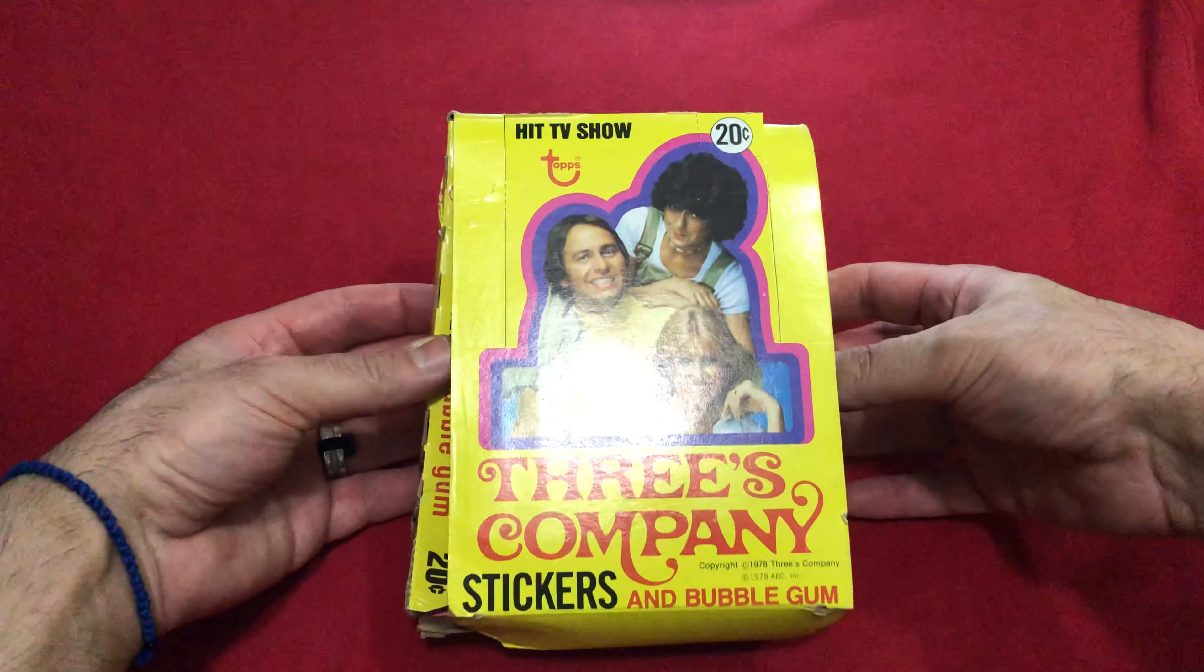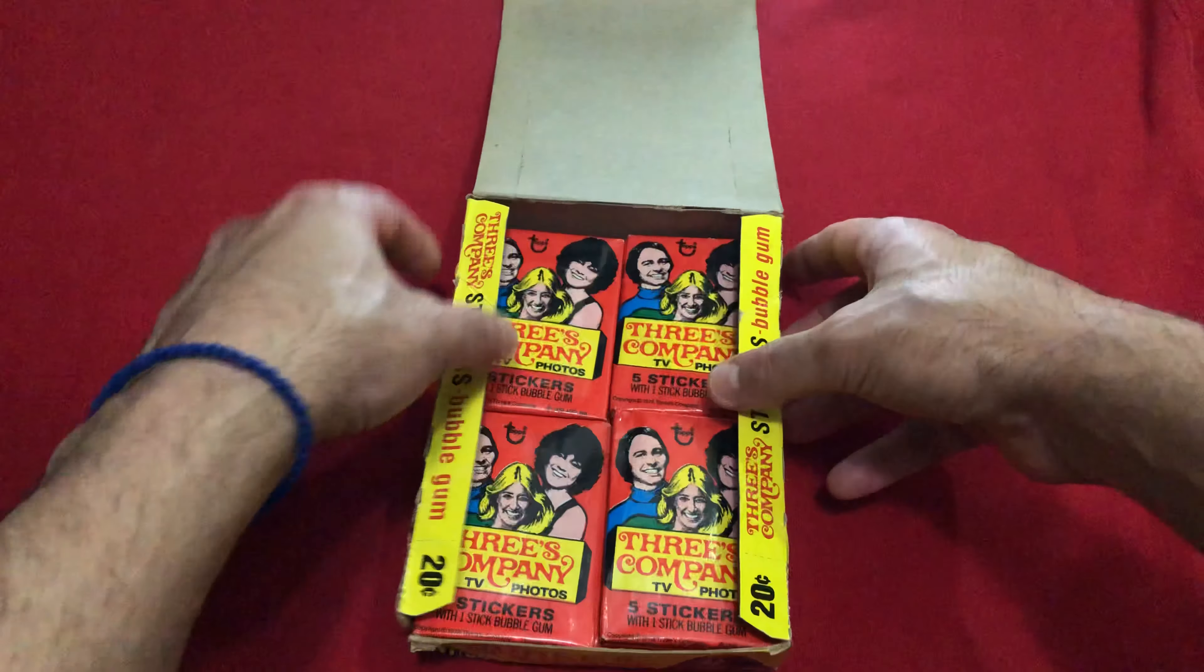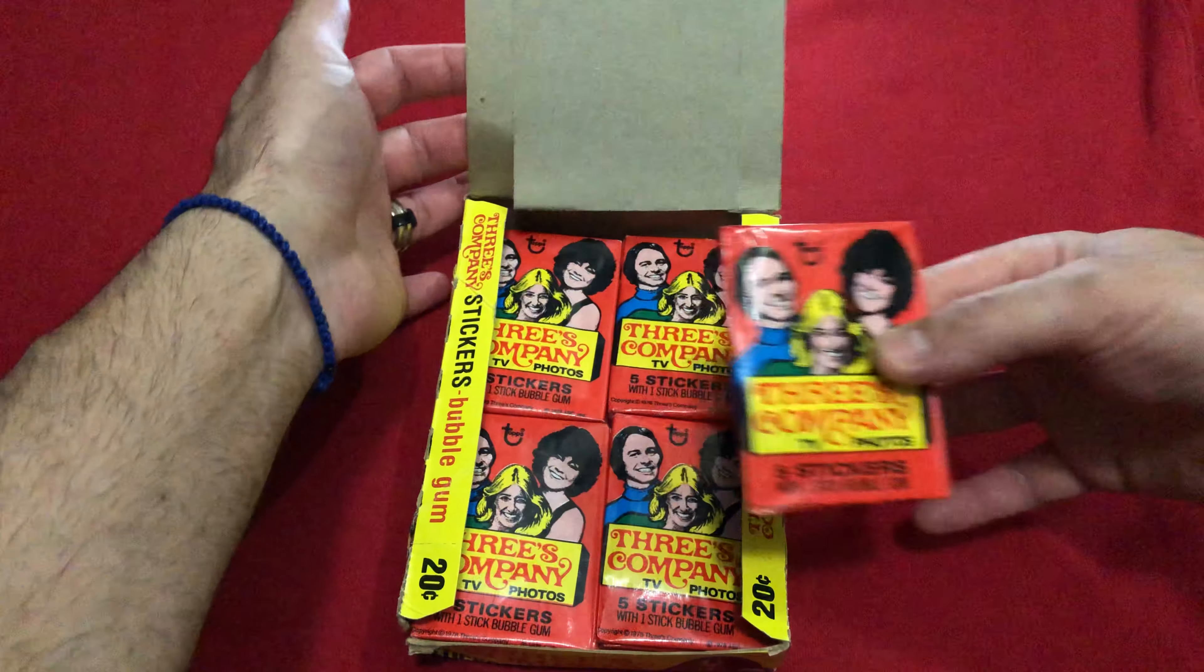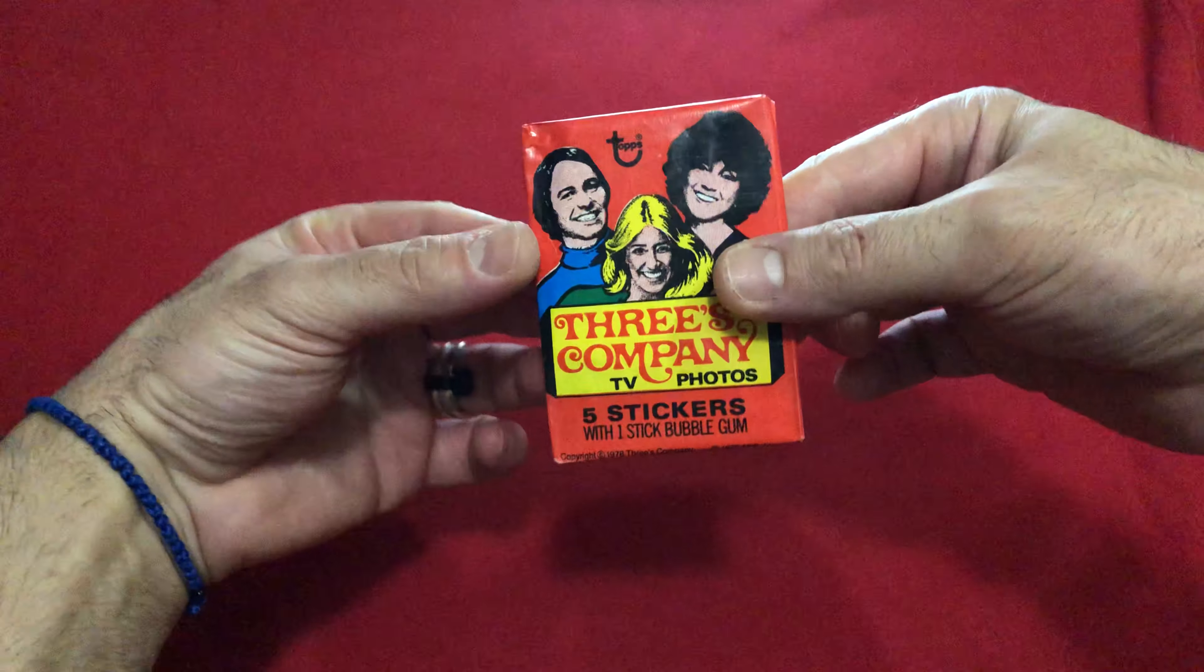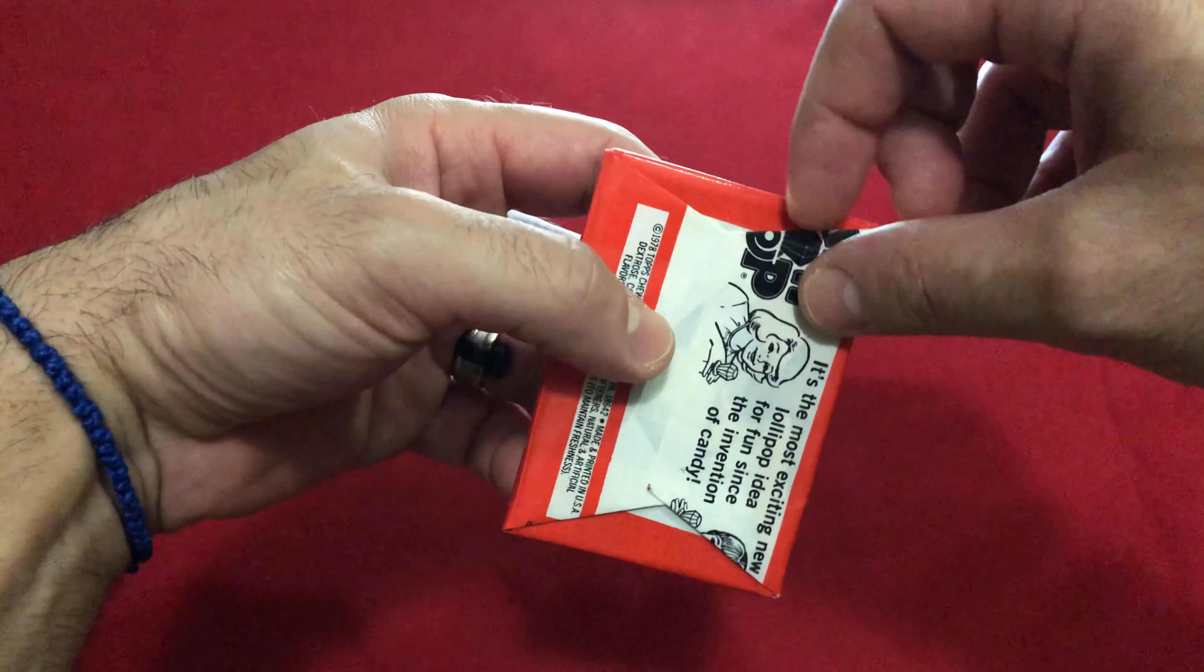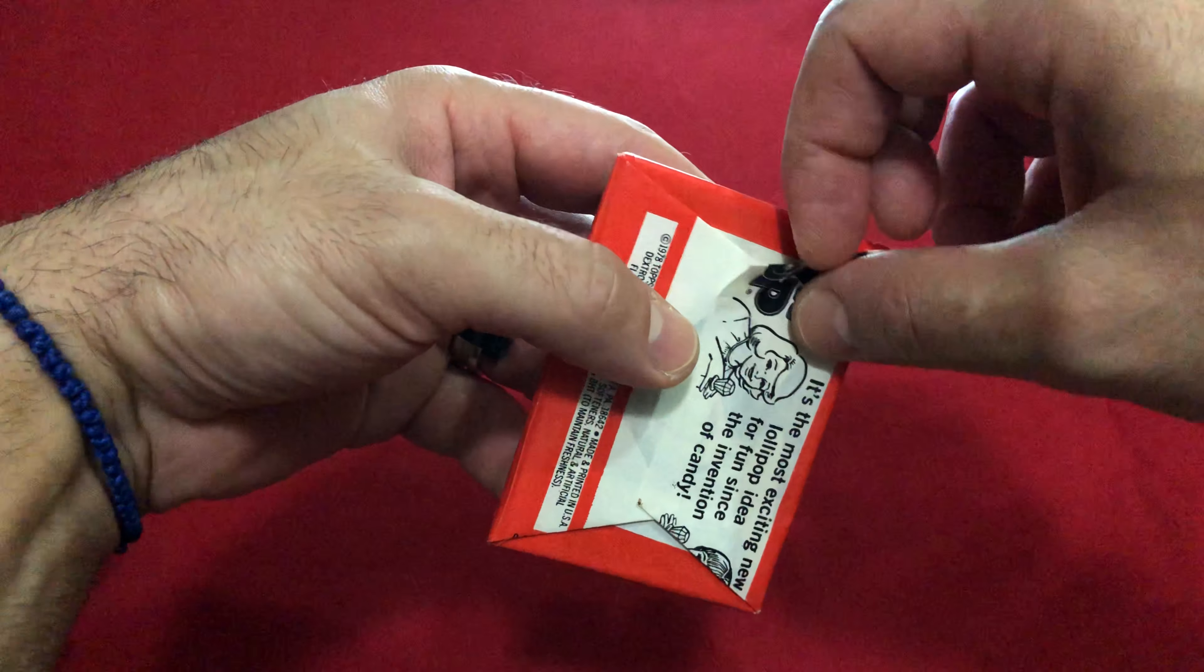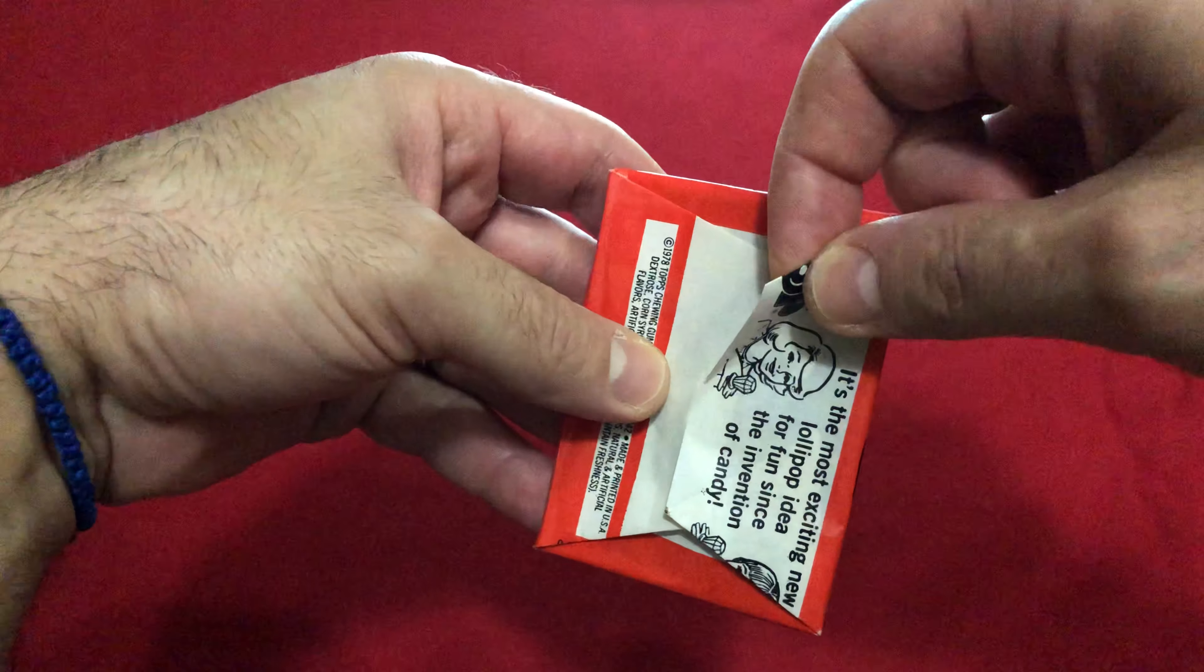Come and knock on my door. Three's Company stickers and bubblegum wax pack video. I would love to use the theme song but would most certainly get flagged by YouTube for copyright infringement, so we can just say come knock on my door, I've been waiting for you.